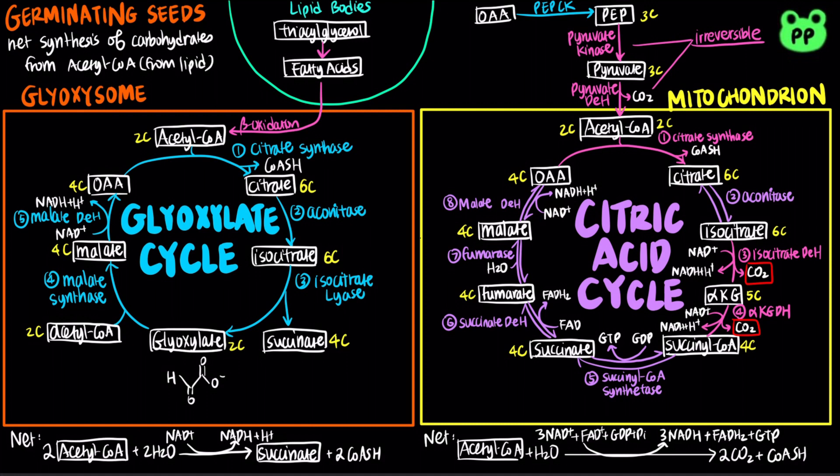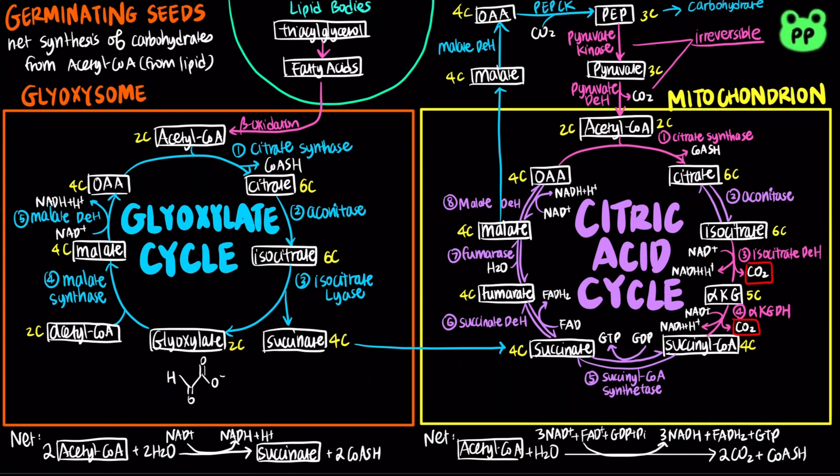The succinate produced from glyoxylate cycle can then enter mitochondrion and enter the citric acid cycle, resulting in a net production of malate, which can be exported out of mitochondria and converted to oxaloacetate, which can then be converted back into phosphoenolpyruvate, leading to carbohydrate biosynthesis.